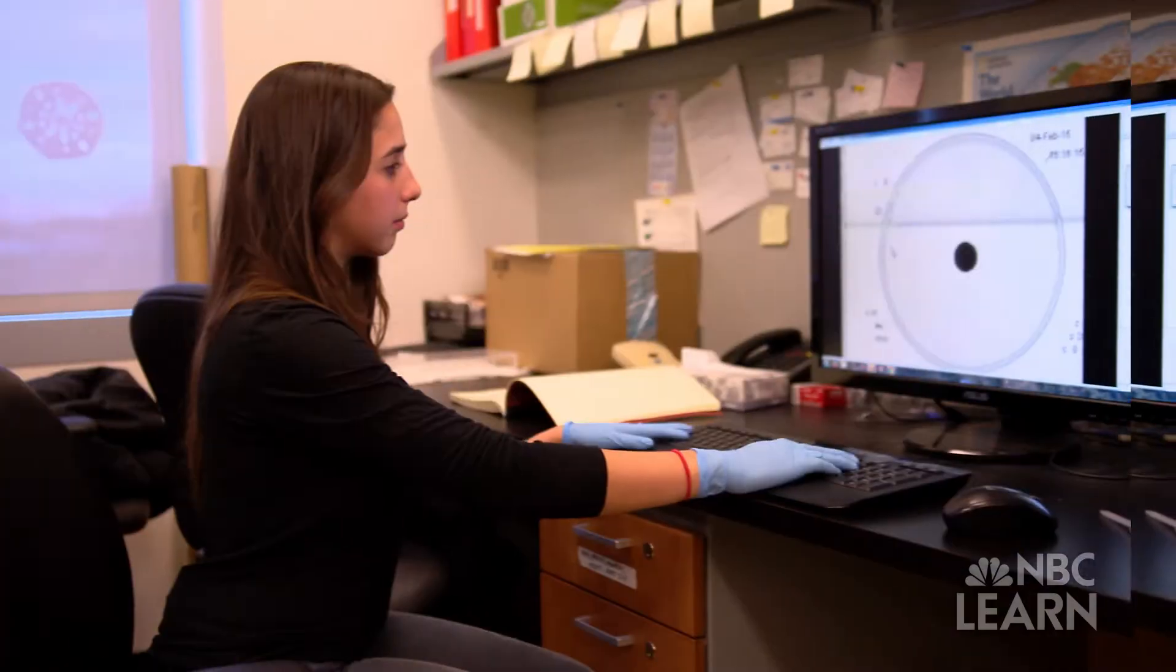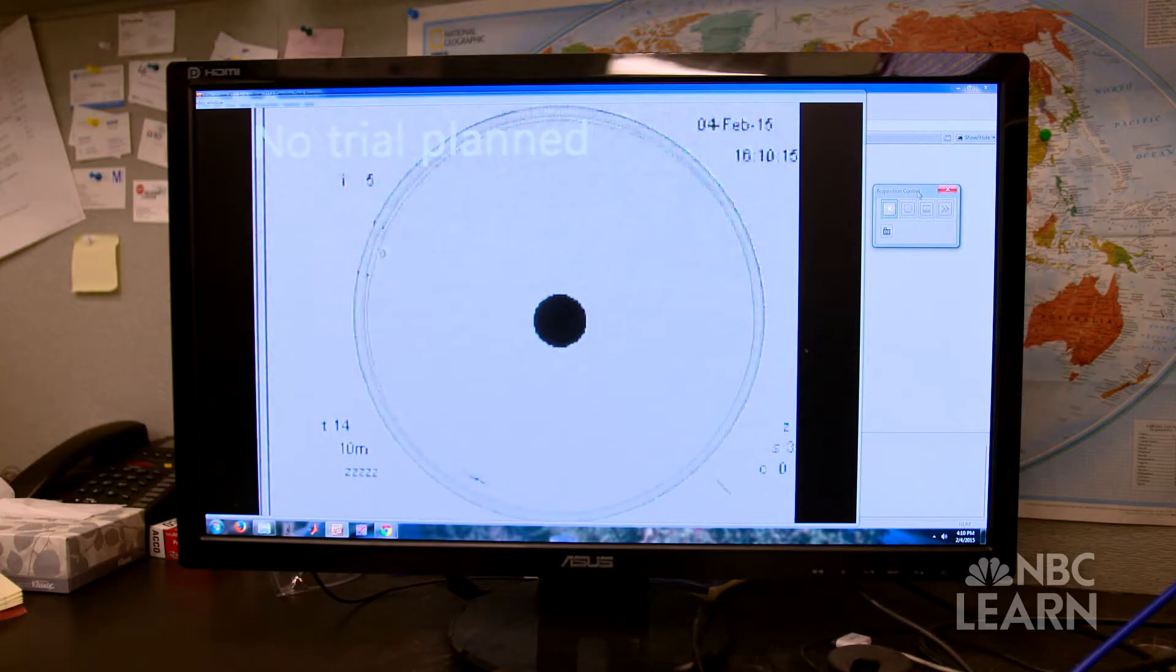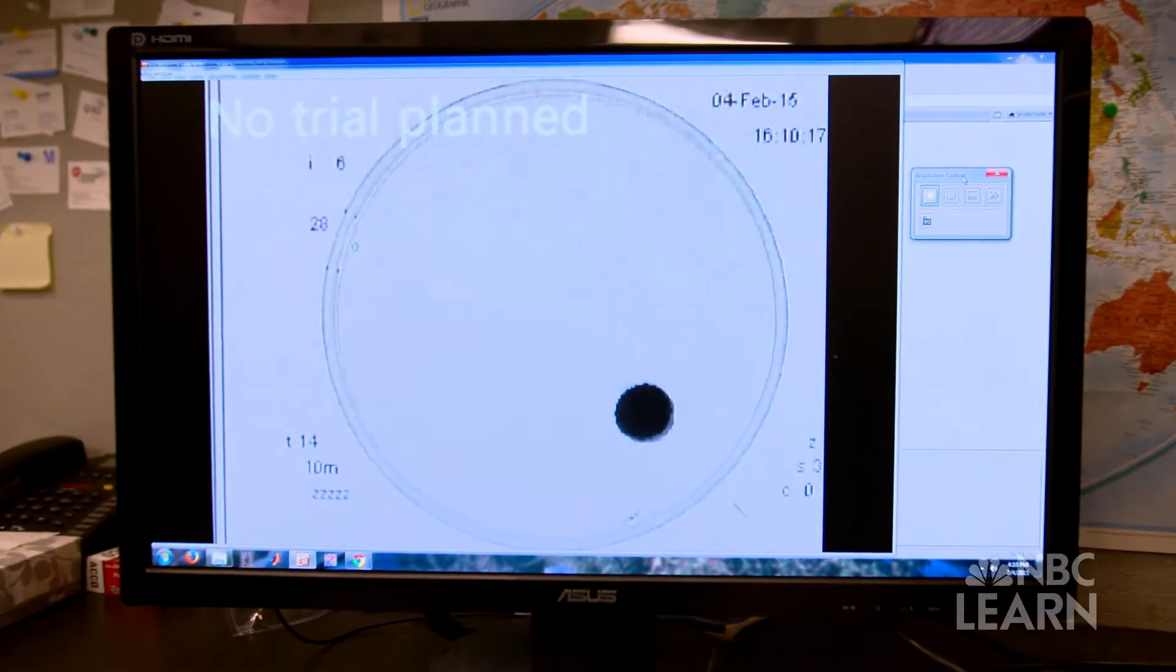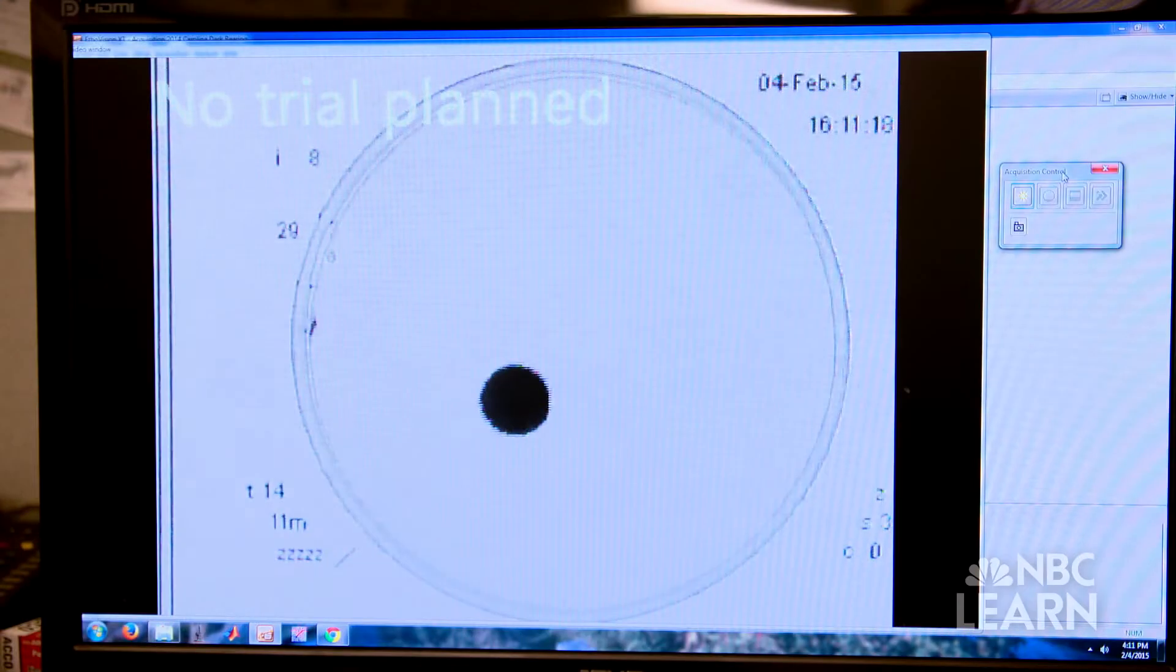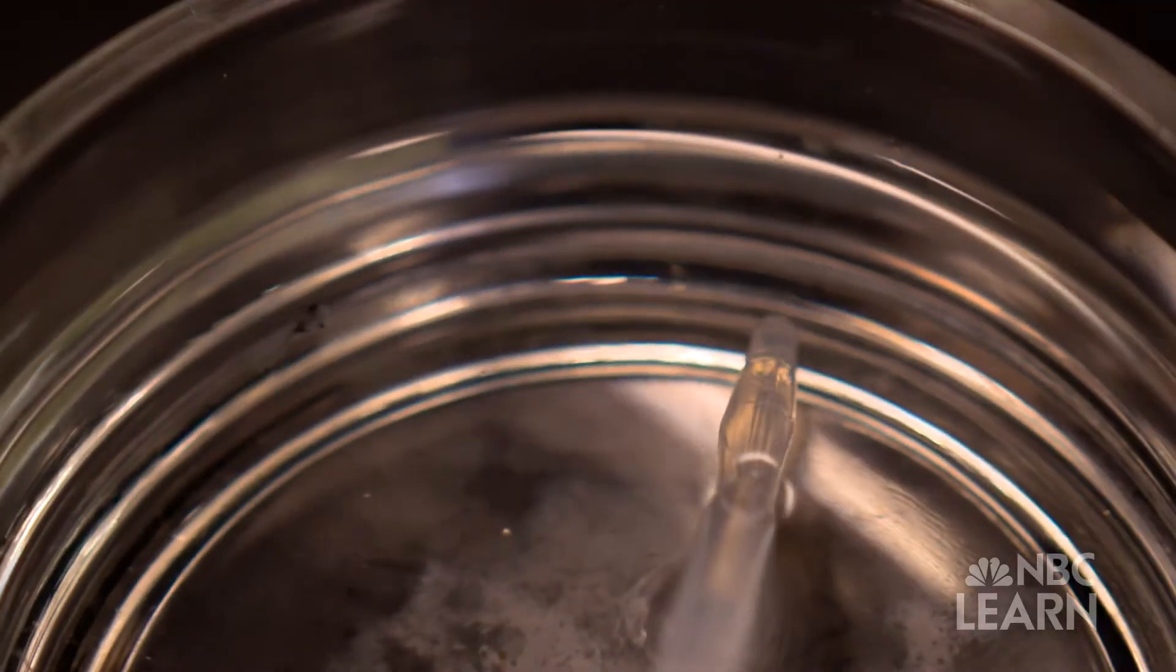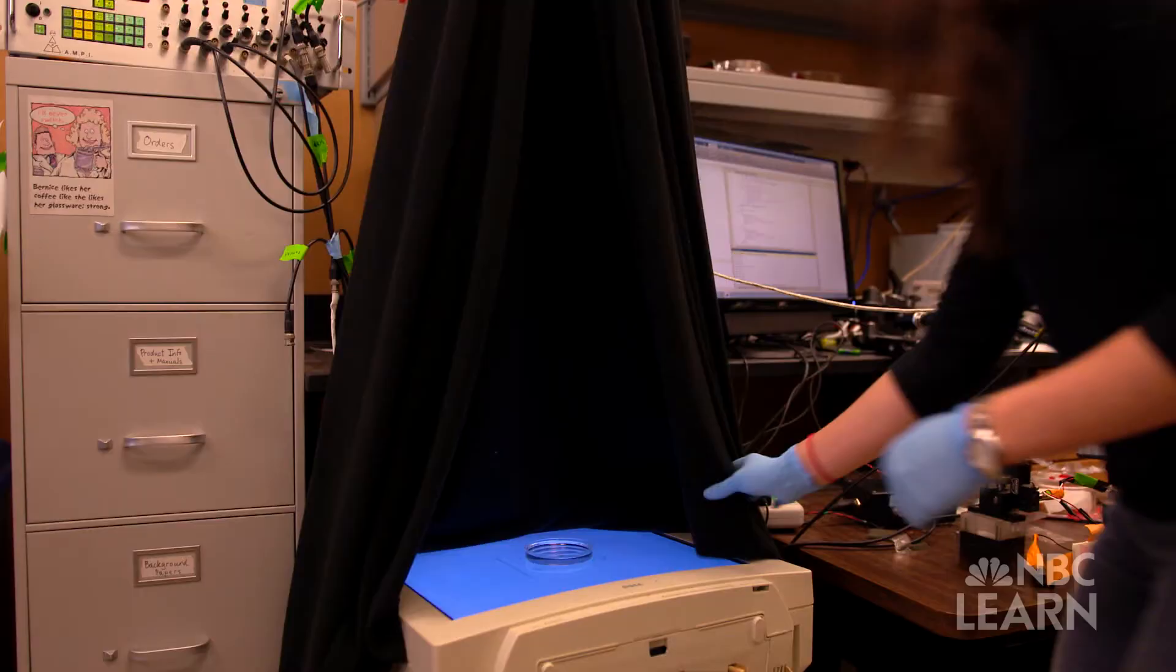Students also study the tadpole's behavior in a collision avoidance experiment. This helps them understand the state of the tadpole's visual networks, which are sculpted by its experience early in life. During the experiment, a tadpole is put into a petri dish on top of a monitor.